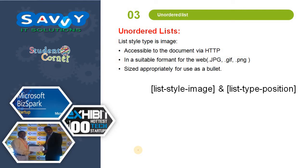Apart from this, we can also import our own image as a list symbol using list-style-image. The image must be accessible to the document via HTTP, in a web-compatible format such as .jpg, .gif, or .png, and sized approximately for use as a bullet. We also need to mention list-style-position.